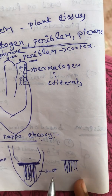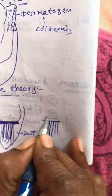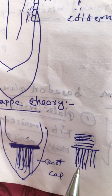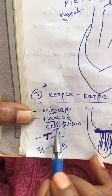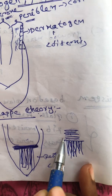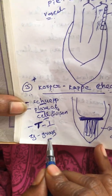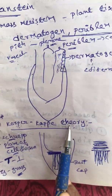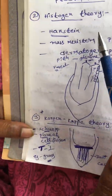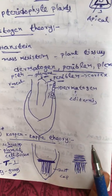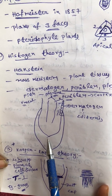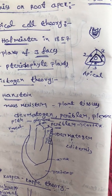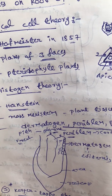At the part above the root cap, the cells are divided horizontally. This is the Korper-Kappe theory - depending upon the plane of cell division, divisions occur in two planes: one is longitudinal, another one is horizontal. This type of theory is mainly seen in grass plants. So these three theories explain root apex development - the root cap area and the area above the root cap. This is about the theories of root apex.